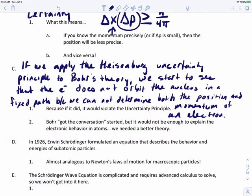Bohr got the conversation started, which was awesome, but it would not be enough to explain the electronic behavior in atoms, and we needed a better theory. It's great, it works for hydrogen and atoms that have only one electron, but if we move on to helium or other atoms, this doesn't work anymore.